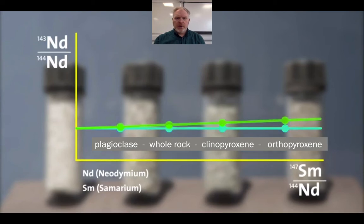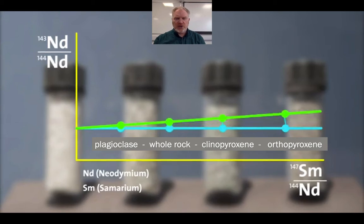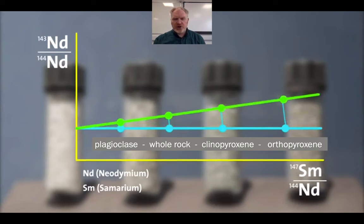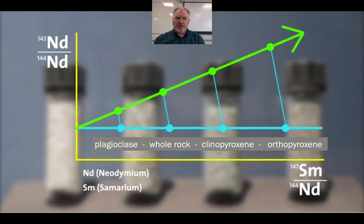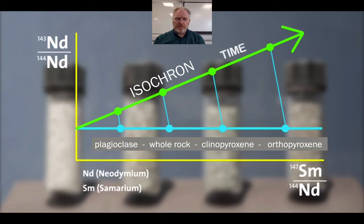Over time, what we see is a change in these ratios, but the change isn't constant in each of these different minerals. We see a bigger change in orthopyroxene and the smallest change in plagioclase. So the more time goes on, the more there's a divergence with this line that we call an isochron and the line that we first started with. It's the difference between these that allows us to establish the date.